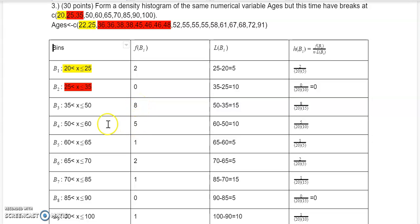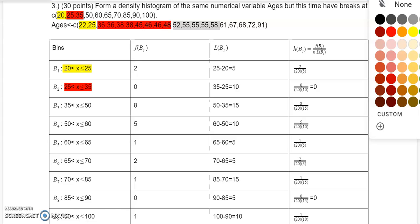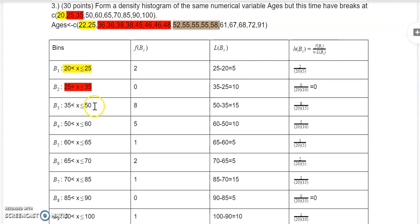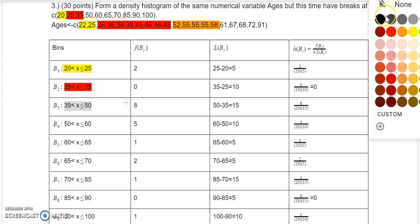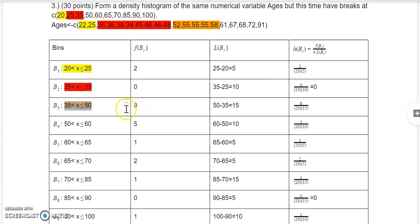For the 50 to 60 bin, that includes 52, 55, 55, 55, 58 — those values correspond to this bin. Counting them: 1, 2, 3, 4, 5. So there are 5 there. That's how I got all the frequencies and the lengths in the table.